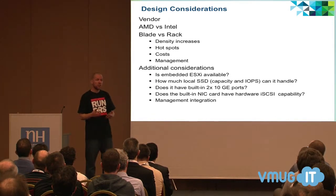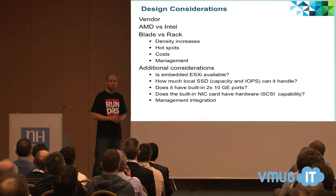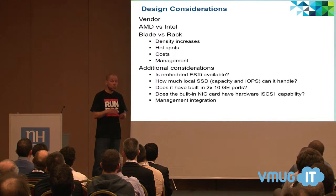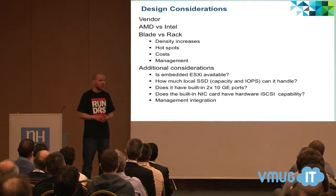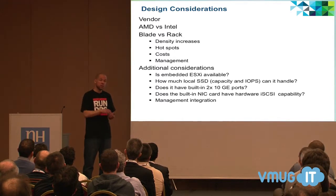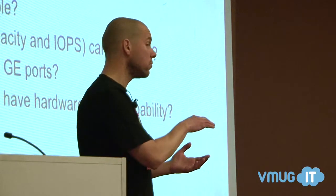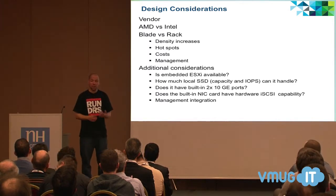Blade versus rack: a thing a lot of people forget when they start using blades is that it creates hotspots in your data center. When I did my first virtual design at an insurance company, management forced us to use blade chassis. We went from six racks of 150-200 physical machines down to two racks with four blade chassis. The cooling system couldn't handle it because the amount of hot air blown out of the blade chassis was far more significant than the 1U or 2U servers we'd replaced.